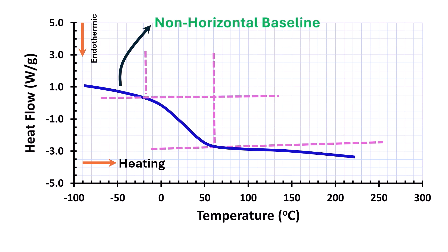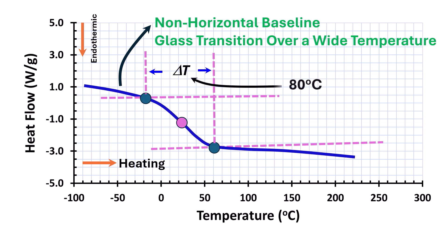In the case of foods and biomaterials, non-horizontal baselines are observed and glass transitions observed over a wide temperature range. The onset, mid, and end glass transition points are marked. In this experiment, the onset glass transition is at minus 20 degrees C and the end glass transition is at 60 degrees C. Therefore, the glass transition is transformed within 80 degree temperature difference.